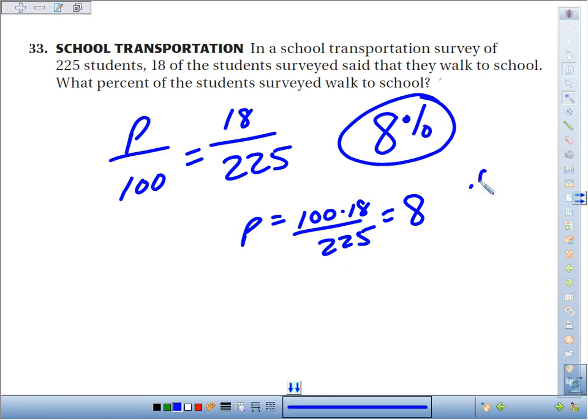18 out of 225 would give you .08 as a decimal, which as a percent is 8%.